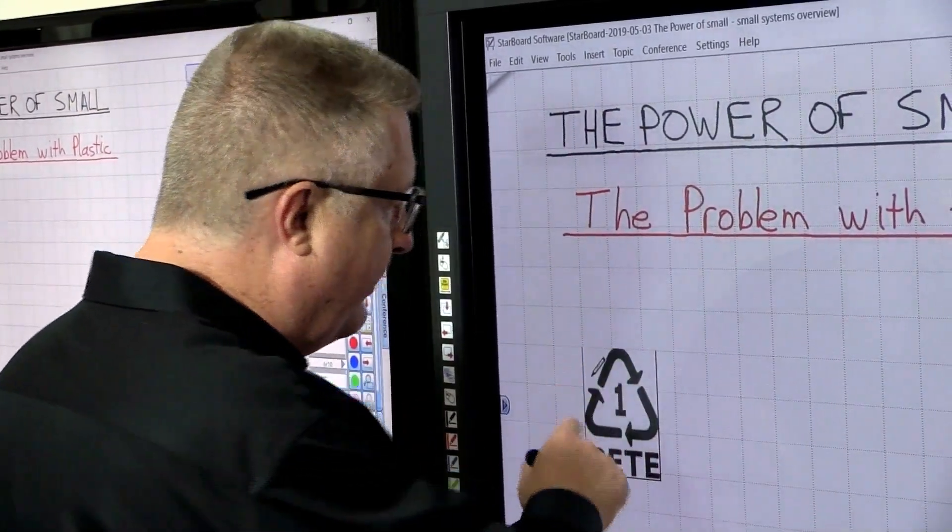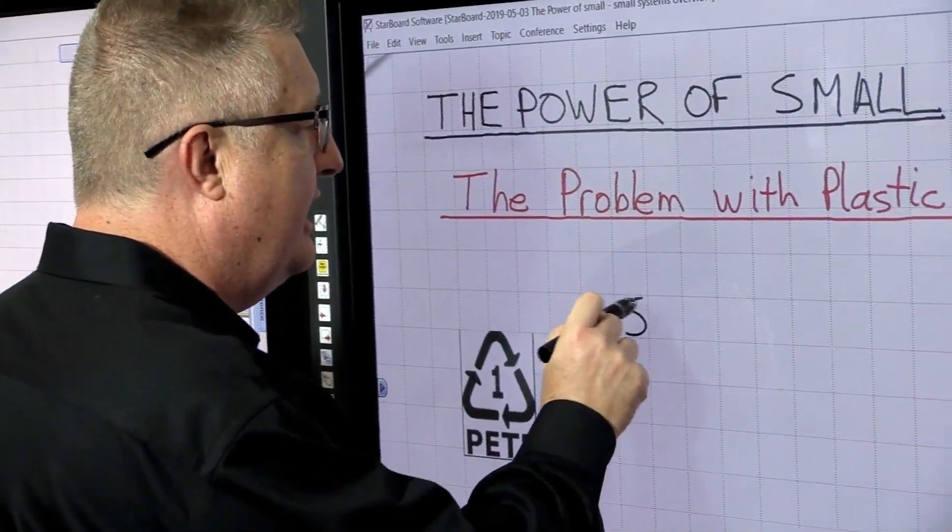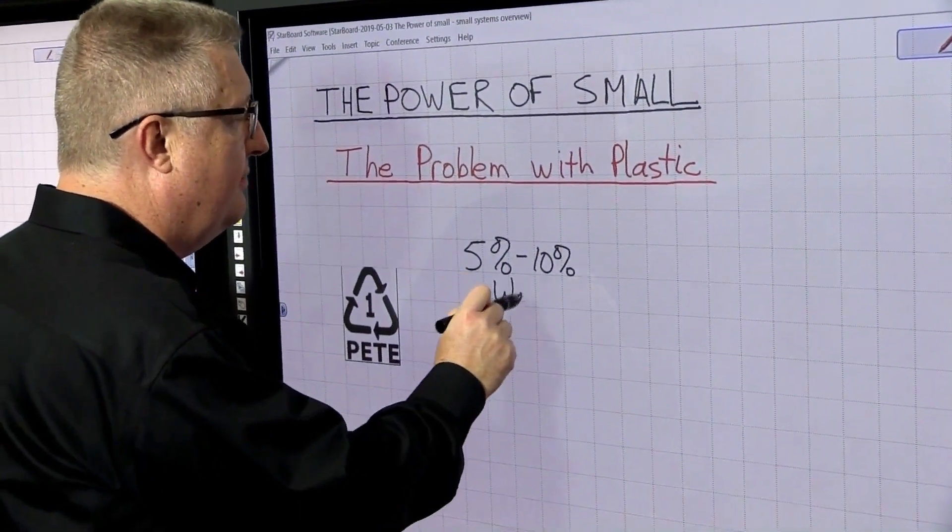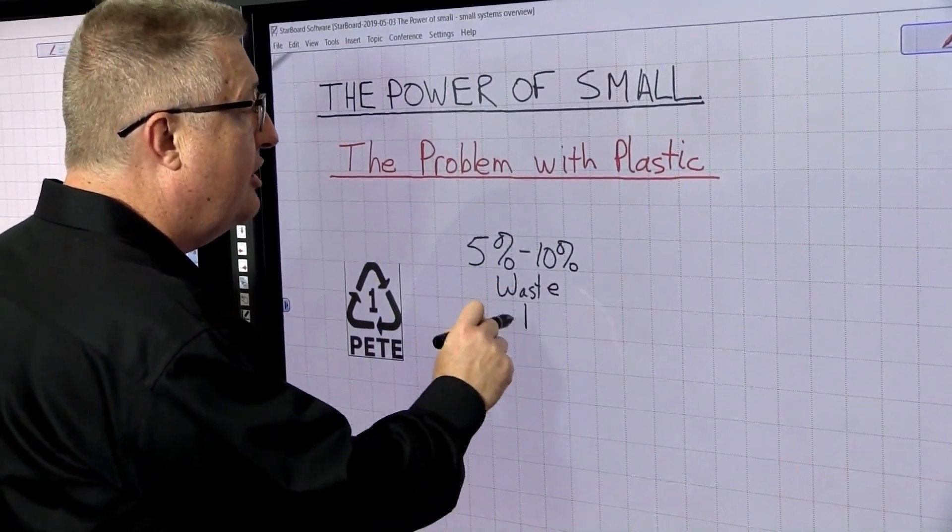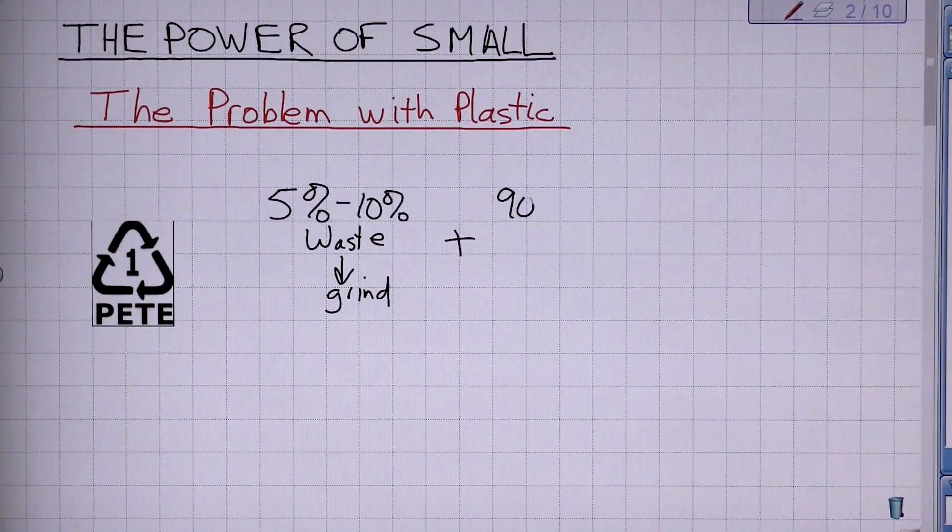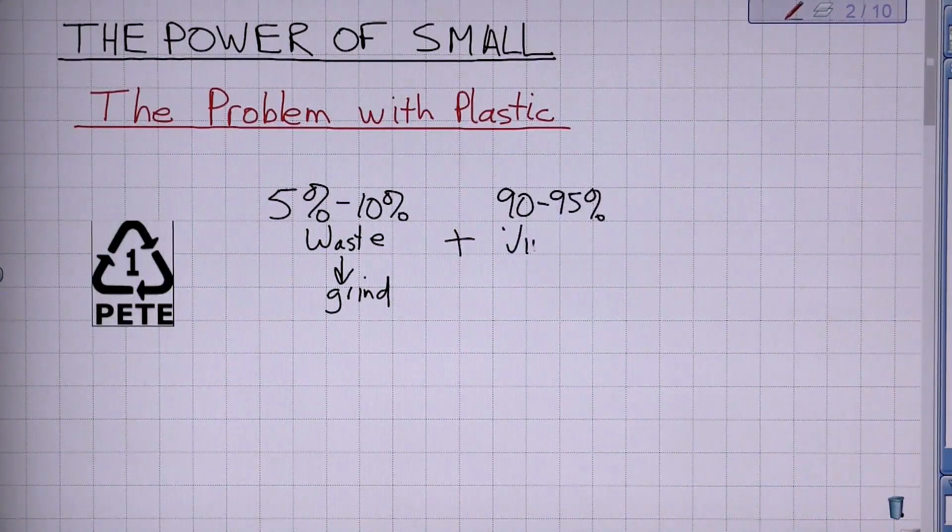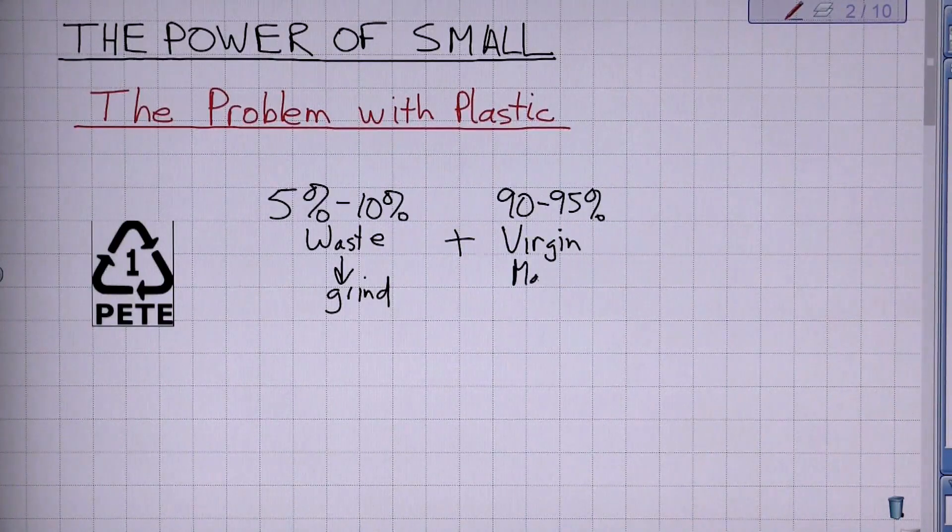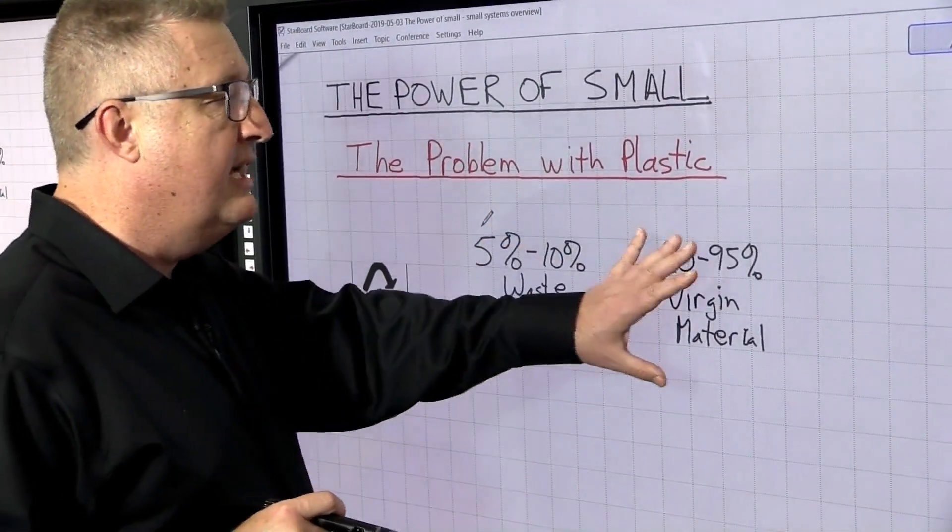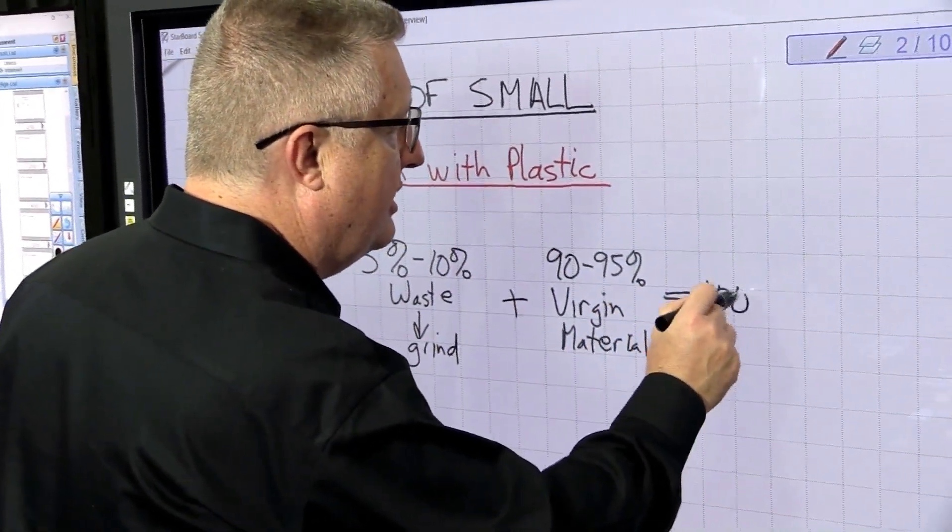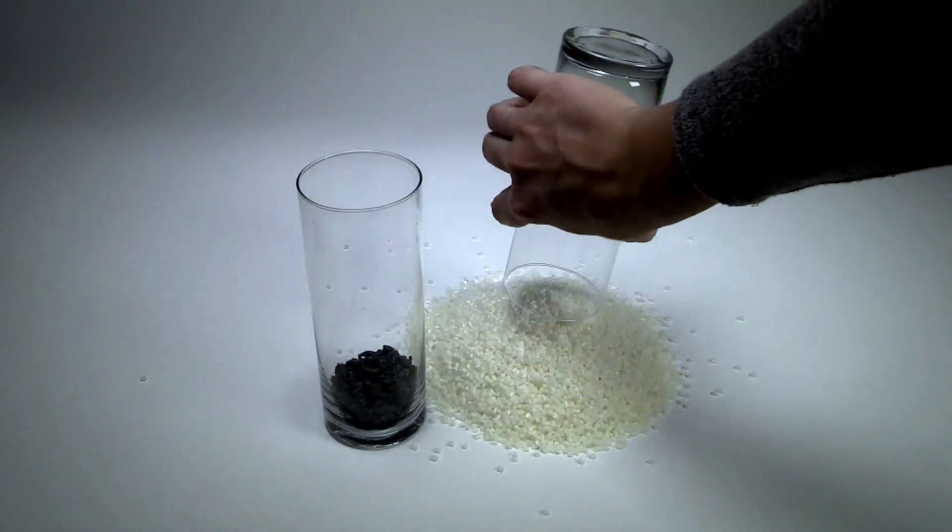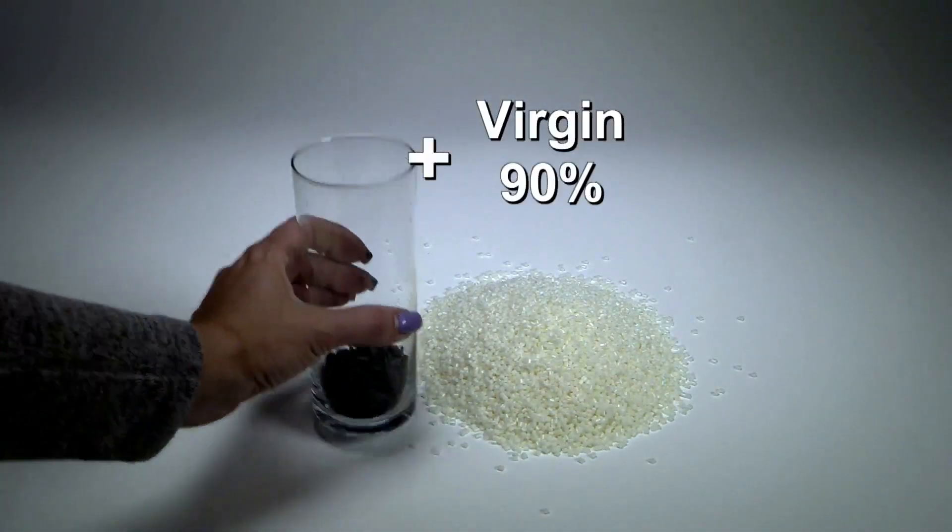What happens is in order for a plastic to be recycled, you're going to take about 5%, maybe as much as 10% of the waste material and you're going to grind it up. You've got to mix it with 90 to 95% virgin material. That means brand new plastic that you've got to be able to use in order to get that 5% or 10% recycled.